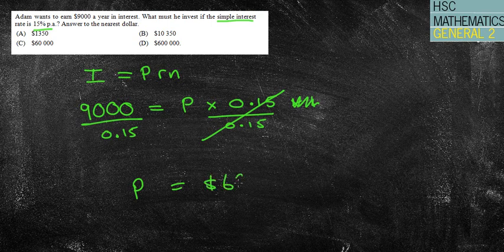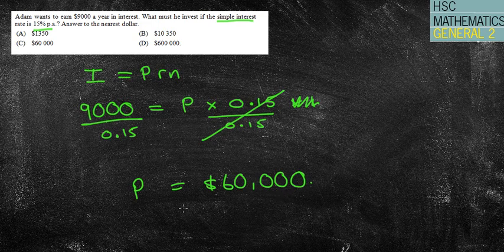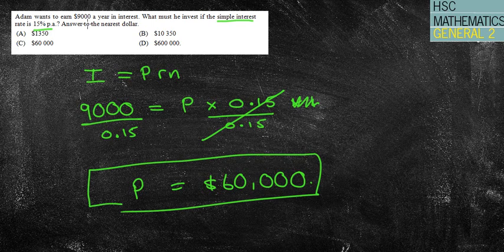So if I was wanting to make $9,000 of interest each year, I would need to invest $60,000. So I'm just going to double check that's the question: what must he invest? Yes, that's what I've got, so the answer is C, $60,000.